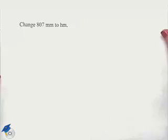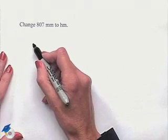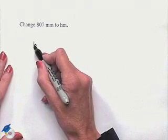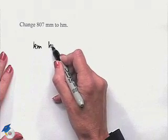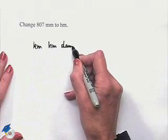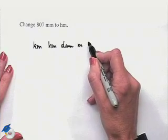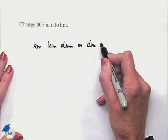Let's look at a problem where we're going to do conversions within the metric system. Change 807 millimeters to hectometers. To do this conversion, we're going to use the following format. Let's write down our units, and as we're doing so, we'll recognize that each unit differs from the one next to it by a power of 10.